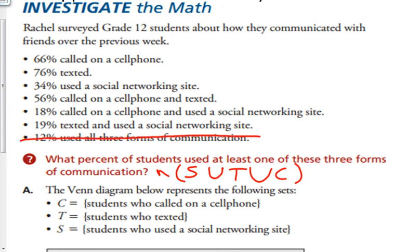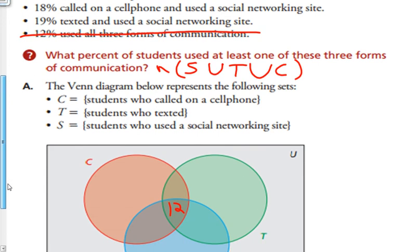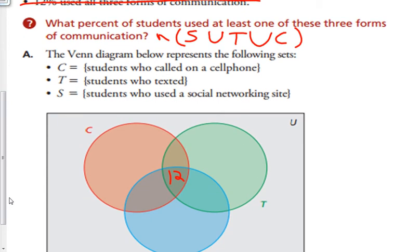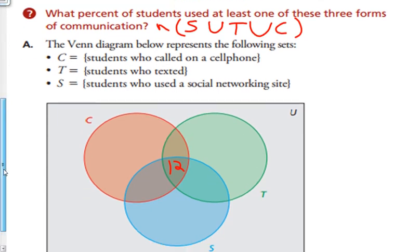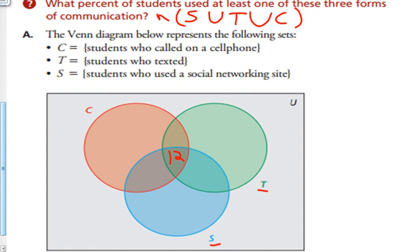19% texted and used social networking. So 19% texted and used social networking. But I've already have 12 in there. So I need 19 minus 12 gives me 7% of students.